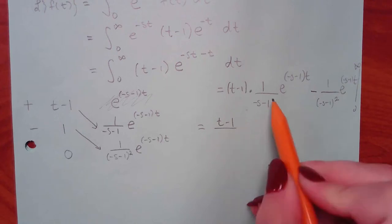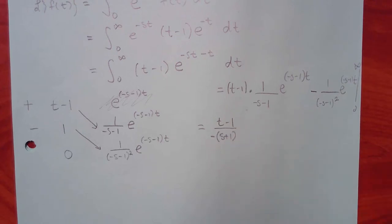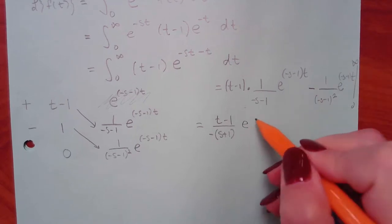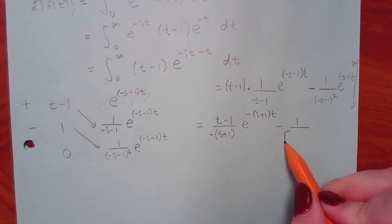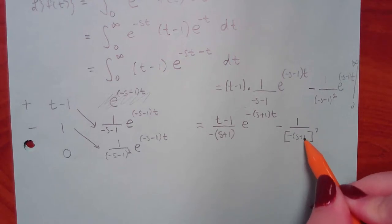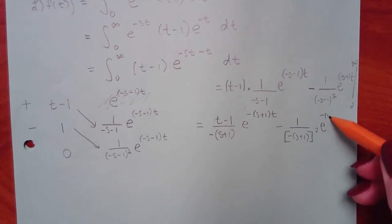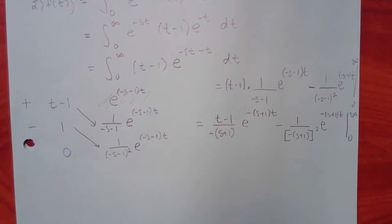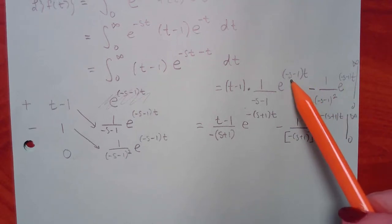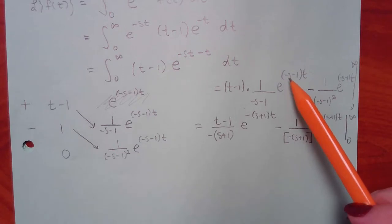Let me clean this up. I'm going to take the negative out of the denominator for both terms, so it becomes clearer. The reason is that e to the infinity goes to infinity, but e to the negative infinity goes to 0. It's a lot clearer if you see that negative explicitly. Otherwise you have to remember that s is between 0 and infinity, so the exponent is going to be negative.